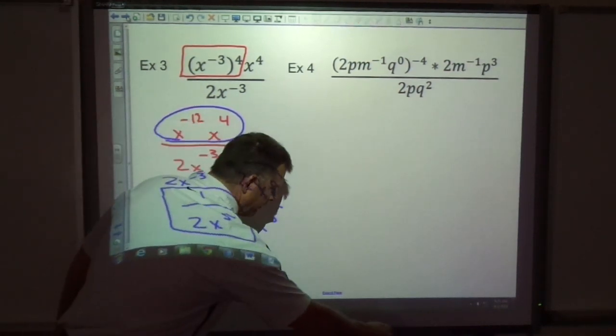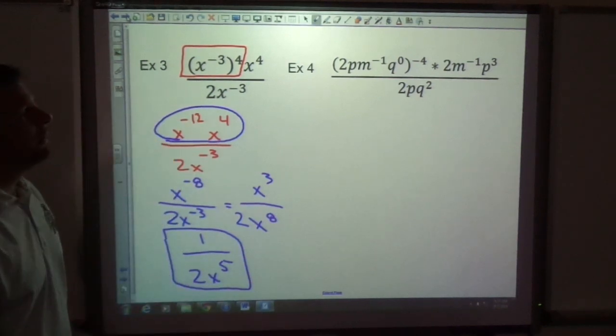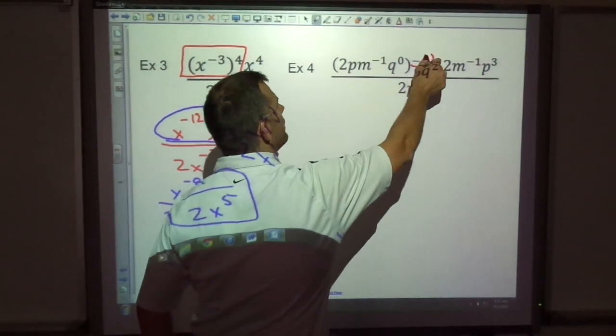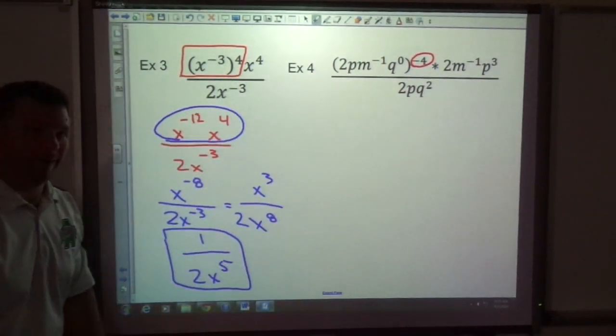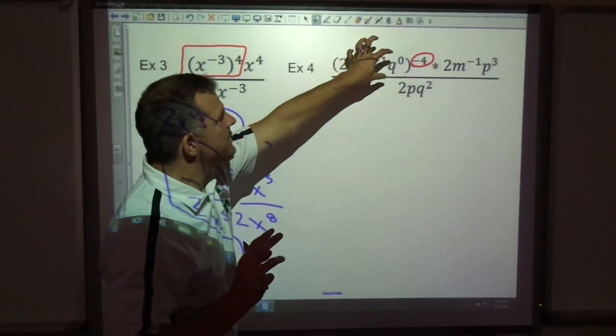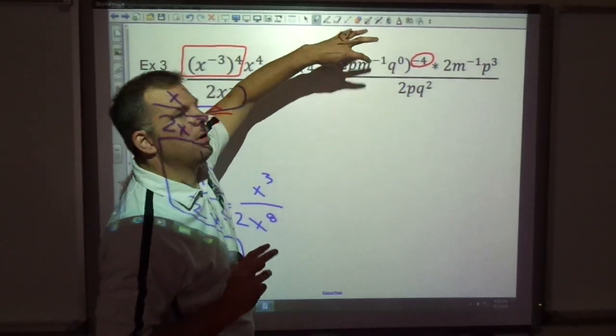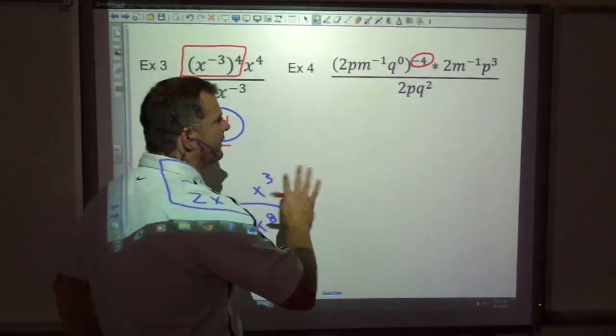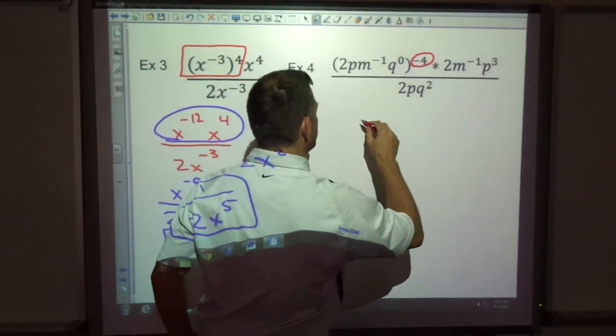My next problem, I've got power to power, but it's a tricky power to power because it's a negative exponent power to power. When I see a negative exponent power to power, that means this whole thing is the reciprocal. This whole thing does not belong upstairs. Move this whole part down.